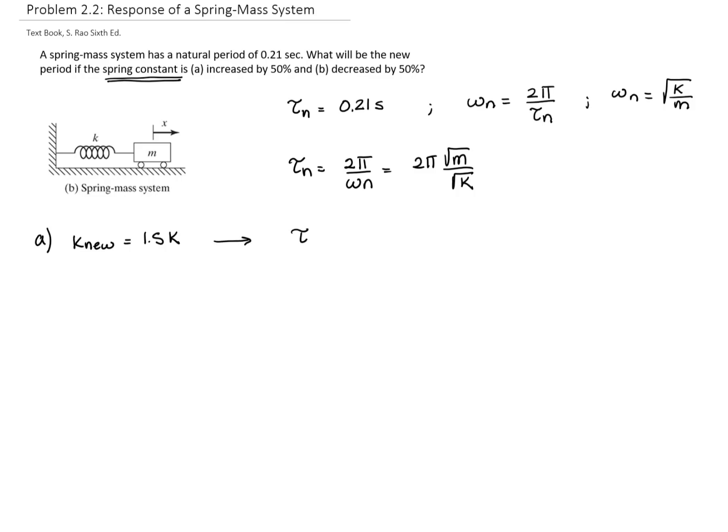Therefore, my new natural period will be 2π, the same mass, and 1.5 times the constant of the spring.